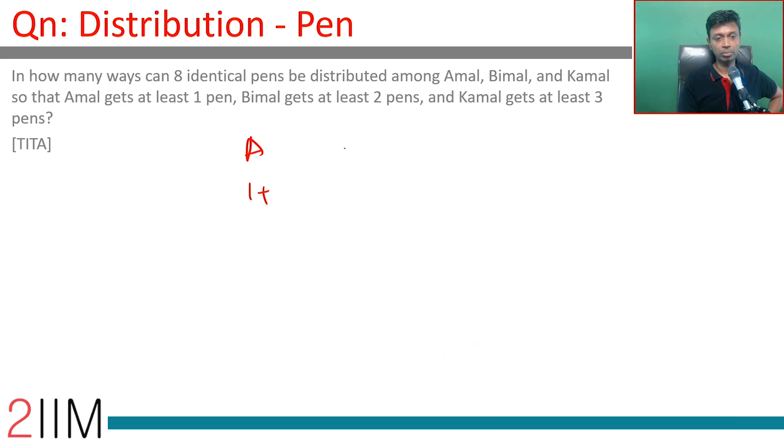Amal 1 plus something, Bimal 2 plus something, Kamal 3 plus something. Let's say 1 plus x, 2 plus y, 3 plus z.